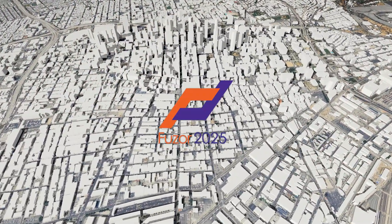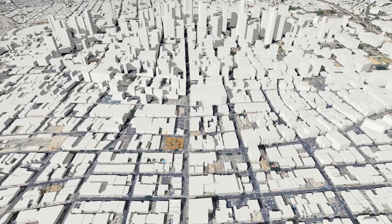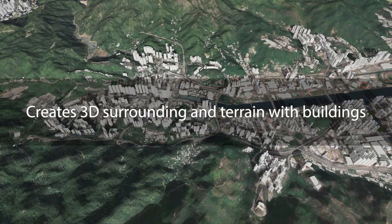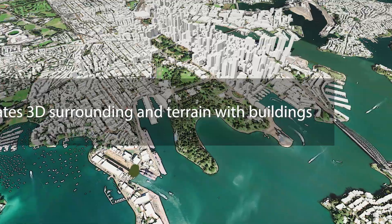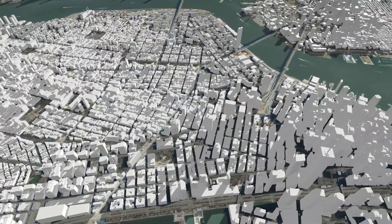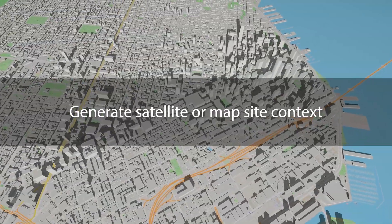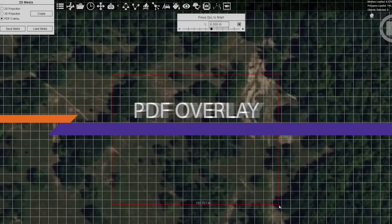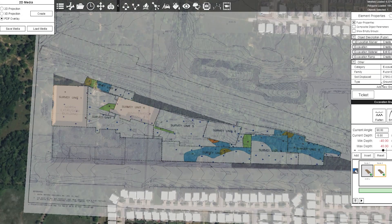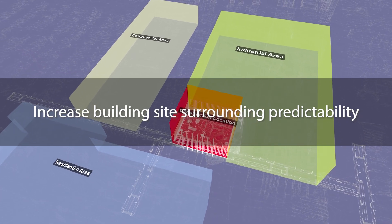We are excited to announce the launch of Fuser 2025. On-site planning is the key to a safe and efficient construction site. Fuser 2025 creates a 3D surrounding and terrain with buildings, allowing an overview of the surrounding environment at the construction site. You can choose from satellite and 2D map when generating the site context. Users can accurately zone out the construction site with the new PDF overlay function, helping identify everything that impacts the construction site in the planning stage.